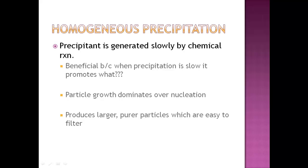So far, we've only talked about precipitation when it's carried out by mixing a solution of precipitant with a solution of analyte. There's another type called homogeneous precipitation. That's when the precipitate is actually generated really slowly but from within an initially homogeneous solution by chemical reaction. The good thing about this is we're not mixing two things together. The precipitation is happening from within the solution, and it's usually really slow. When the precipitation is slow, particle growth is dominating. That'll give you larger, purer particles that are really easy to filter versus nucleation, which gives you tiny particles that are not easy to filter.